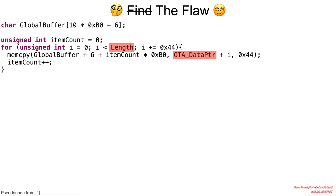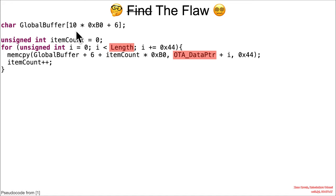The information given for this vulnerability is such that I'm not even going to have you try to find the flaw, because this is the pseudocode and it's a little too trivial. What you've got is a global buffer that they've helpfully described as 10 times B0 plus 6 large — there's going to be a 6-byte header and then 10 entries, which are B0 each.